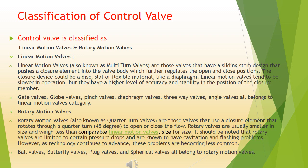Rotary motion valves, also known as quarter-turn valves, are those valves that use a closure element that rotates through a quarter-turn — 45 degrees — to open or close the flow. Rotary valves are usually smaller in size and weigh less than comparable linear motion valves, size for size. It should be noted that rotary valves are limited to certain pressure drops and are known to have cavitation and flashing problems.